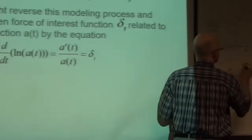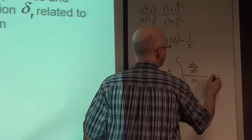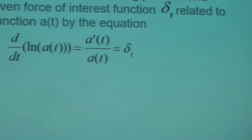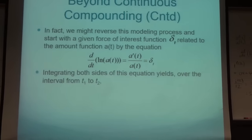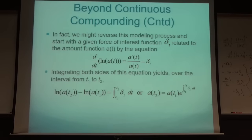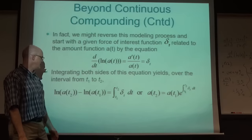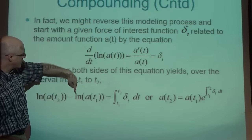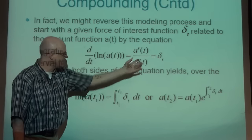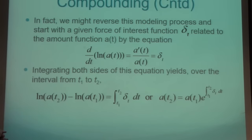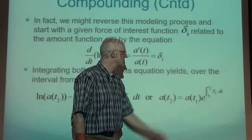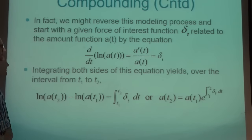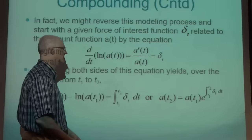This can be thought of as the differential equation dA/dt divided by A equals delta_t. Integrate both sides from t1 to t2: the left side gives ln(a(t2)) - ln(a(t1)) = ln(a(t2)/a(t1)); the right side is the integral of delta_t. Exponentiating and multiplying both sides by a(t1), you get a(t2) = a(t1) · exp(∫[t1 to t2] delta_t dt).